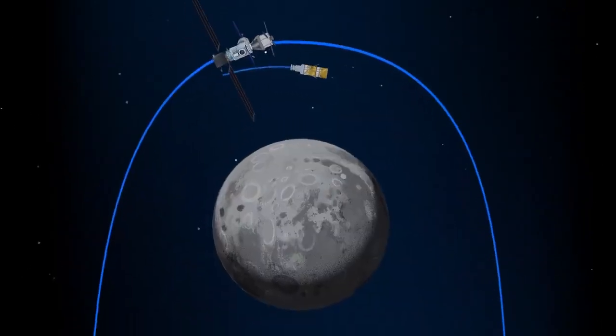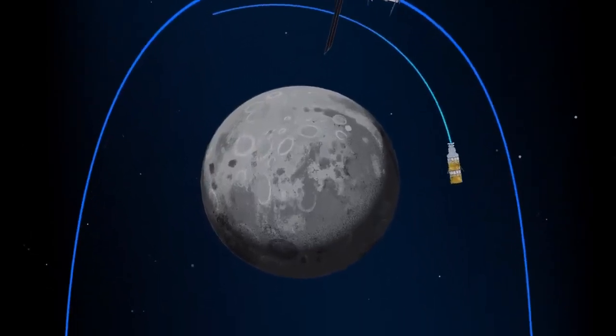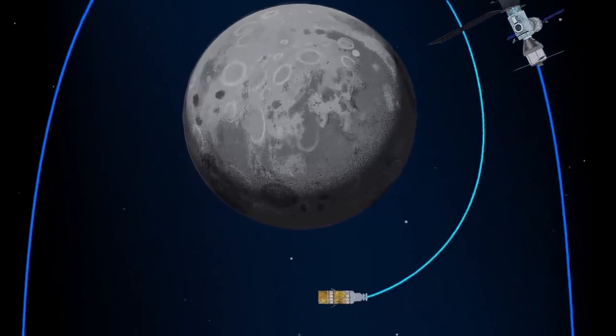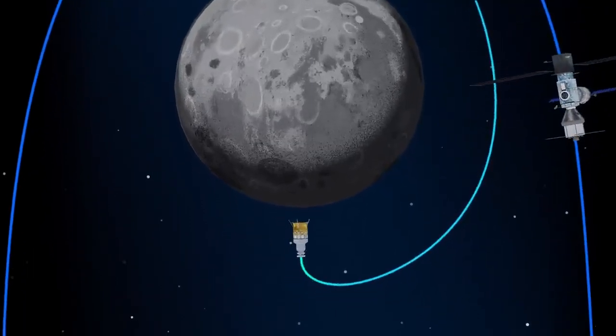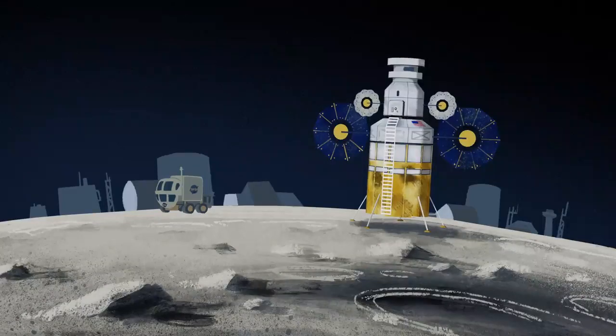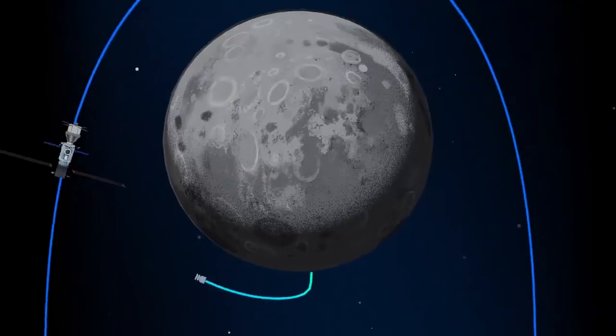The lunar lander system itself is built for three unique steps: descending from the halo orbit of Gateway down to a low lunar orbit, descending from low lunar orbit to the surface, and once the lunar mission is complete, launching from the surface of the Moon and ascending all the way back to the orbiting Gateway.